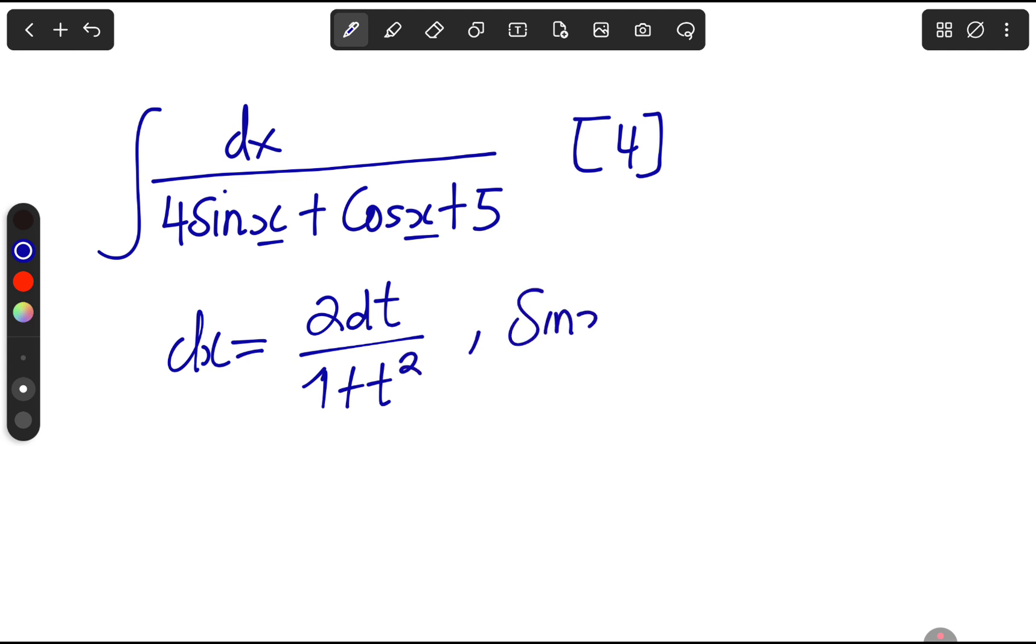And where you find sine x, you just put 2t over 1 plus t squared. Of course, I'm not going to go through how this came about, because it's quite a journey. Not really that much of a journey, but there are some identities that you need to remember under trigonometry.